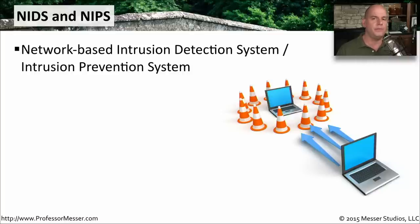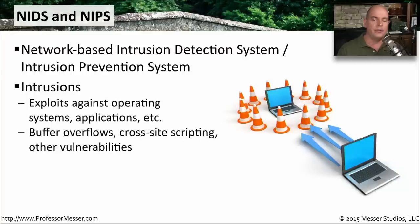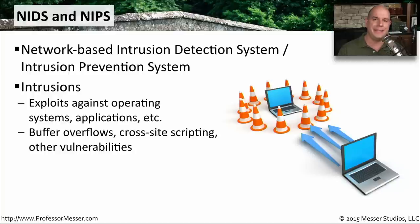These go beyond what you would find with a firewall. An intrusion detection or intrusion prevention system is designed to look into the data itself. They can stop operating system exploits, look at application vulnerabilities, stop buffer overflows, or identify cross-site scripting. They get into the details of network communication and allow or deny traffic based on particular rules.